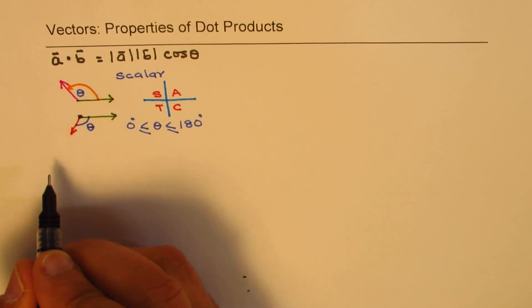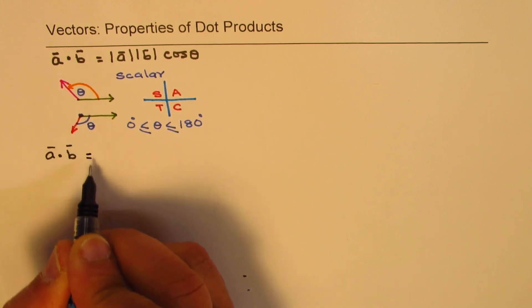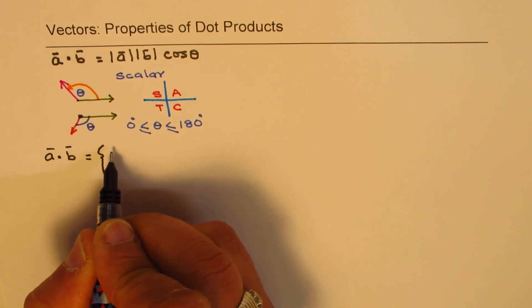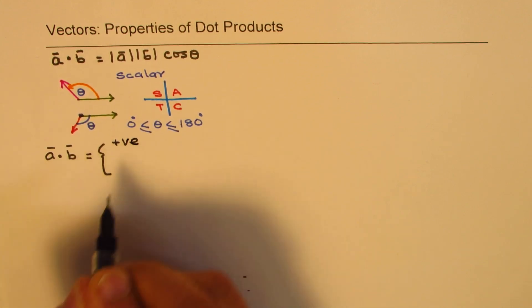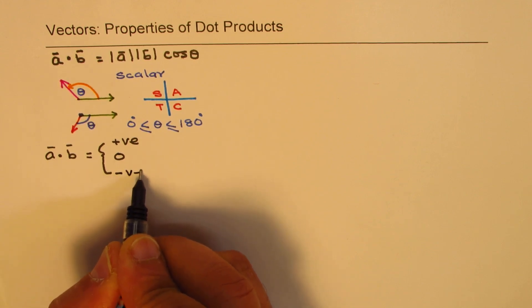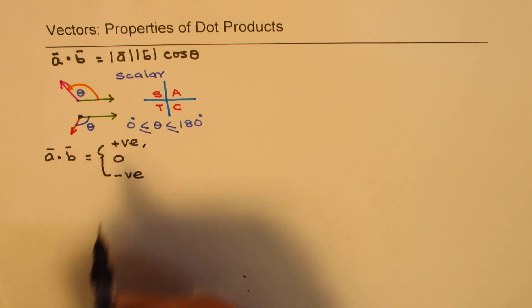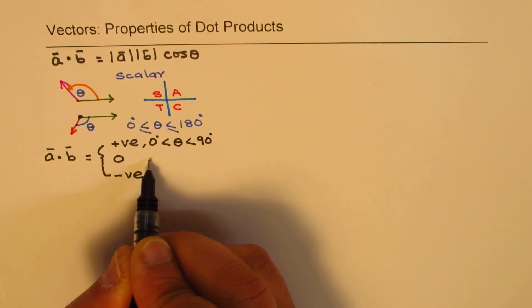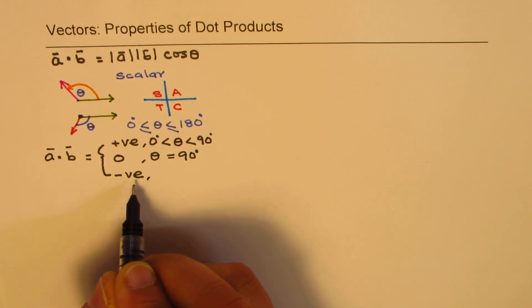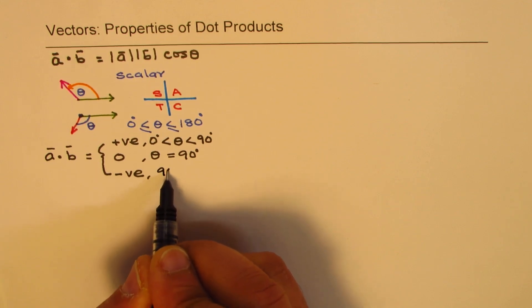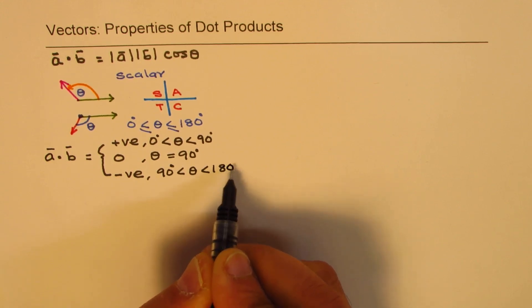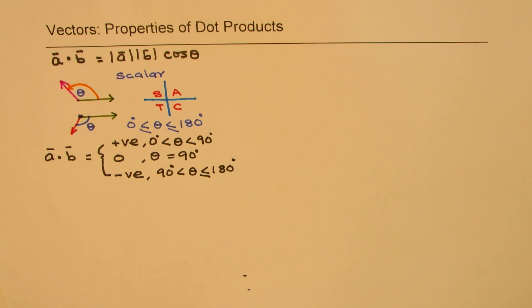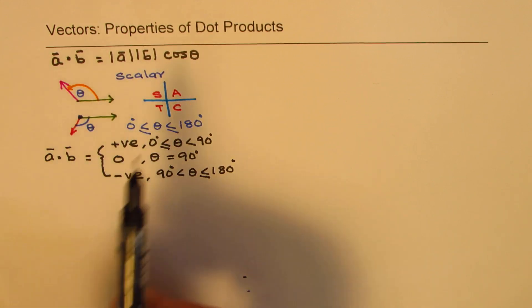Since cosine is positive in quadrant 1 but negative in quadrant 2, the value of a dot b could be either positive, negative, or even zero. The value is positive if theta is between 0 to 90 degrees, it is zero when theta equals 90 degrees, and it is negative if theta is from 90 degrees to 180 degrees.